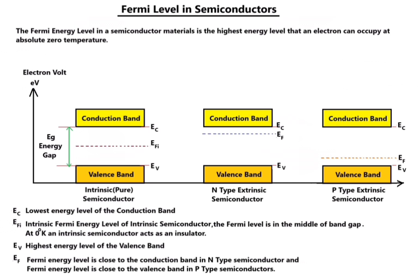EV represents the highest energy level of the valence band. EF, the Fermi energy level, is close to the conduction band in N-type semiconductor and close to the valence band in P-type semiconductors.